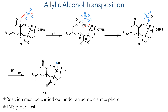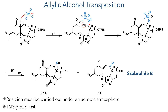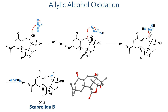It was essential to the success of this reaction that it was carried out under an aerobic atmosphere. Interestingly, they also observed over-oxidation, forming an enone. Incidentally, this unintended by-product was the final target, Scabralide B, which was formed in a 7% yield. To completely oxidise the allylic alcohol, they reacted it with manganese dioxide. This is attacked by the alcohol, and the resulting intermediate can intramolecularly abstract a hydrogen atom, forming a manganese(III) intermediate, that is further reduced to produce the target Scabralide B in a 51% yield.